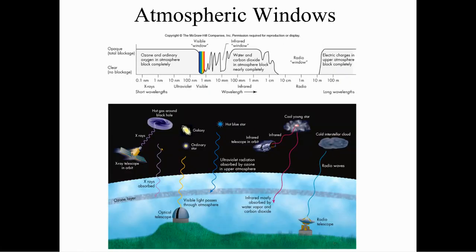Remember those atmospheric windows — we've seen this picture before. Only certain wavelengths make it through to our surface. X-rays are absorbed; gamma rays are absorbed. So we have to look for atmospheric windows. A radio telescope works absolutely fine through the atmosphere; optical telescopes work somewhat, but some wavelengths are still filtered out by our atmosphere.